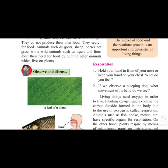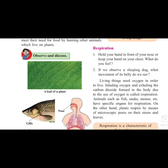Animals such as fish, snake, mouse, etc. have specific organs for respiration. It is not that fish have a nose — they breathe with the help of gills. If you see a frog, a frog breathes with its skin when it is in the water. But when it comes out of the water, it breathes with the help of its nose and lungs. Each and every organism has a specific organ for their respiration.